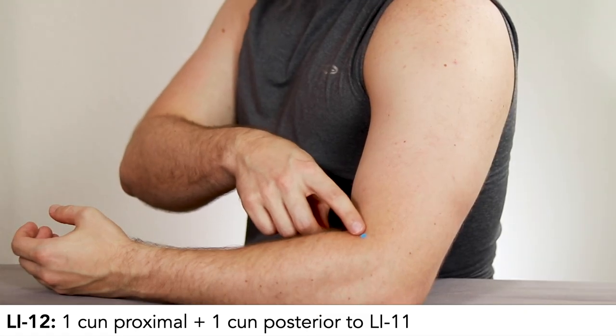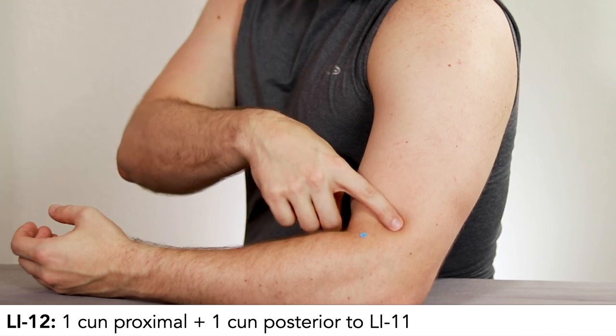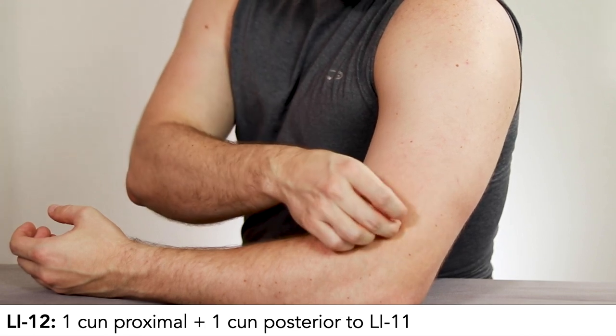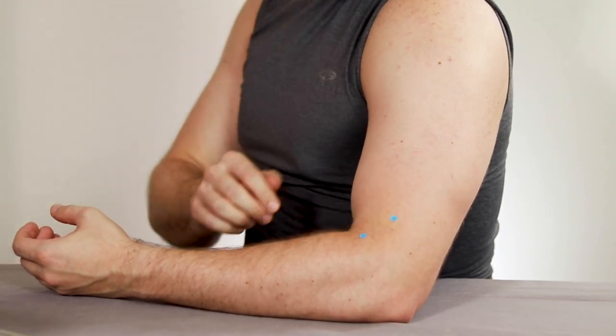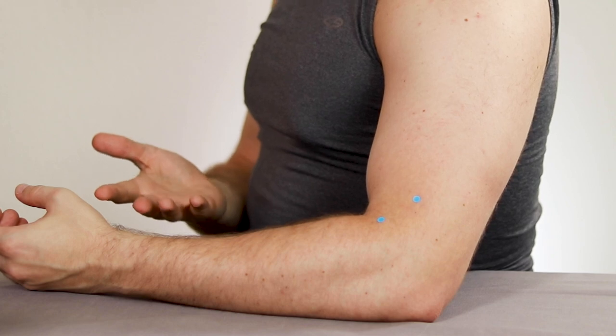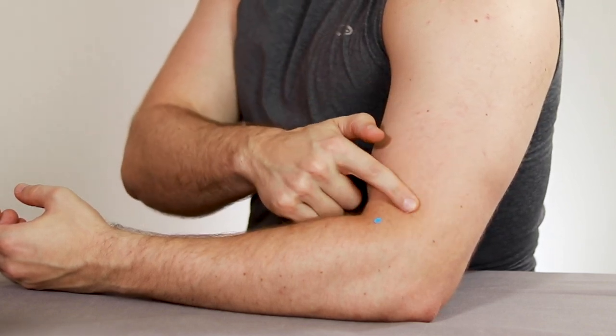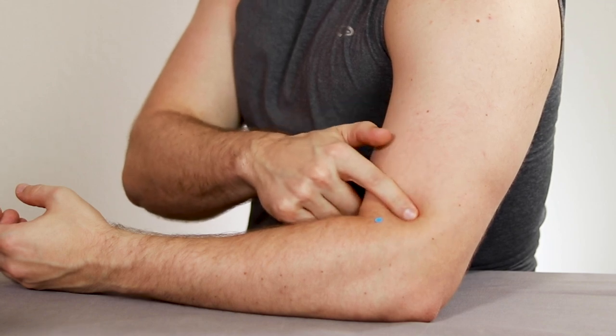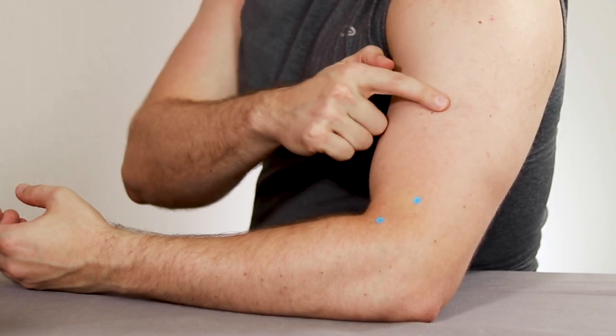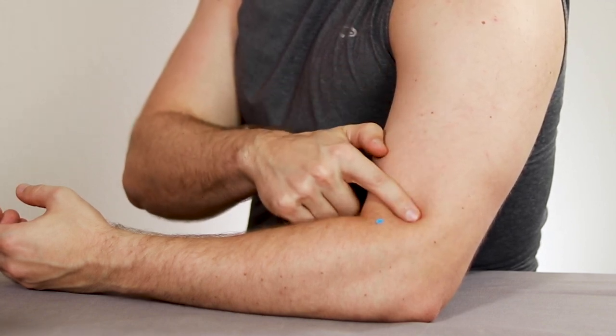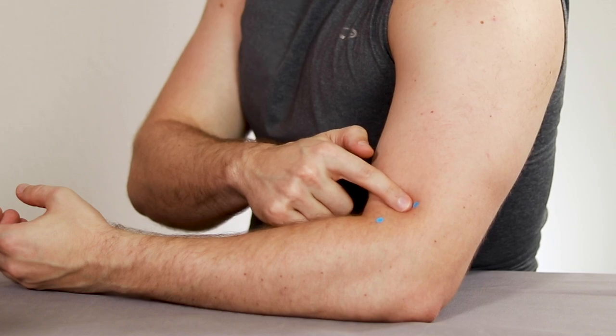For LI12, we're going to start here and come 1 cun up and 1 cun back to give us LI12. How do we measure 1 cun? Well, we really don't need to. We're just feeling for this nice little corner pocket right above the lateral epicondyle of the humerus. We can feel down until we fall in this depression for LI12.